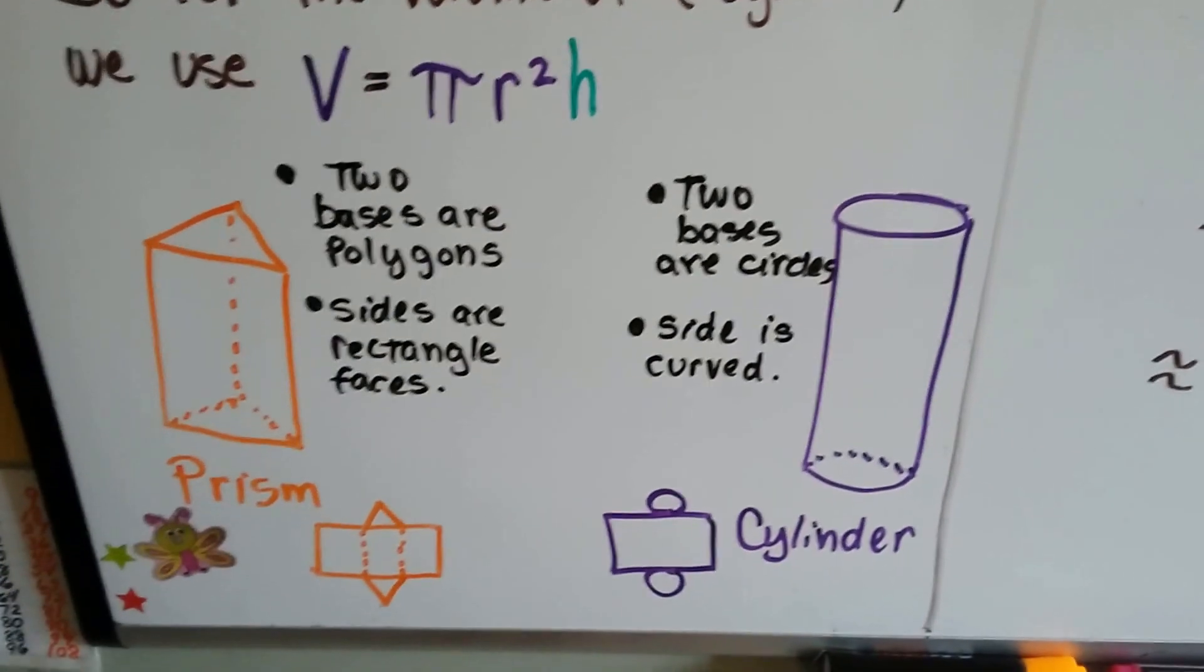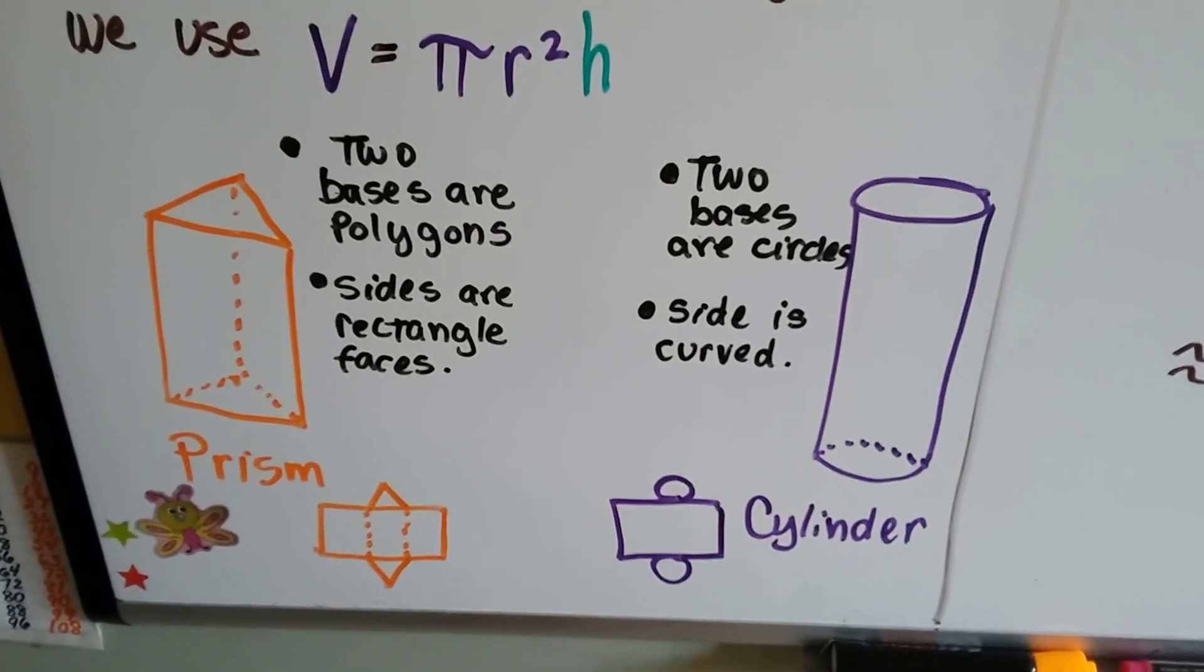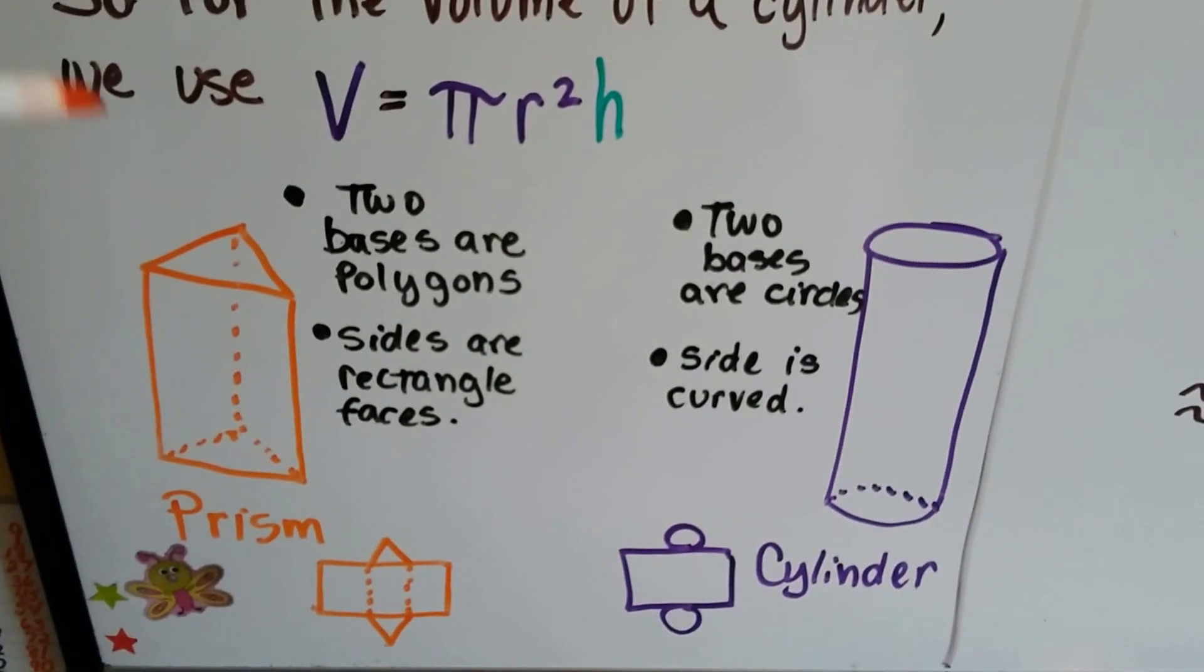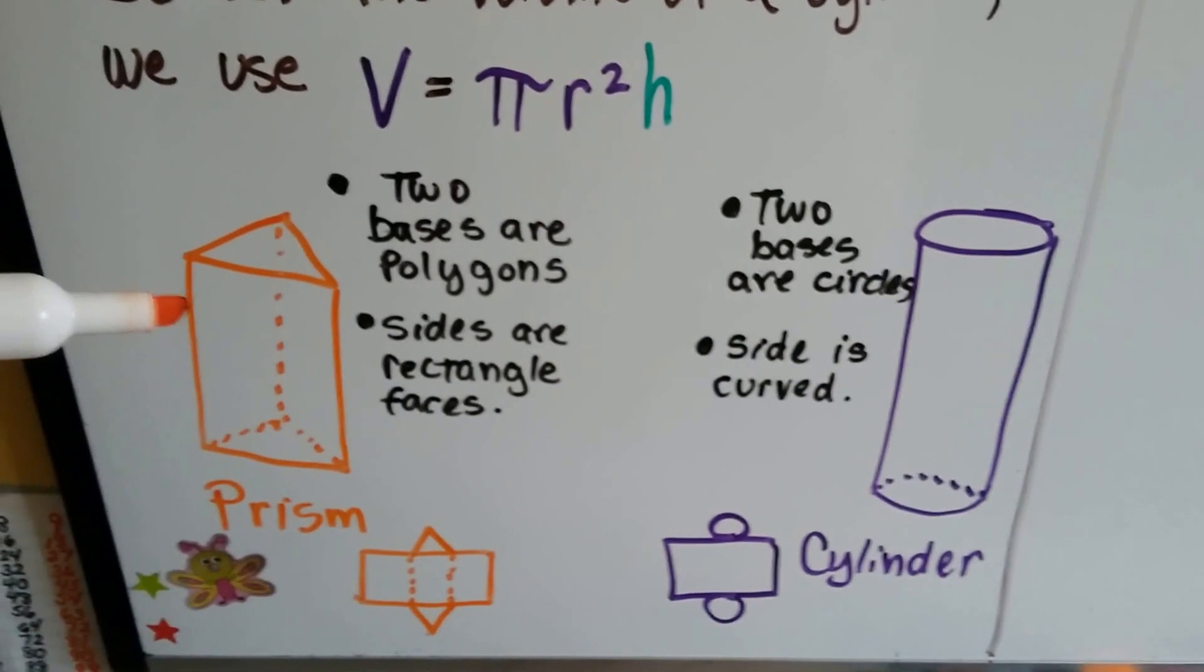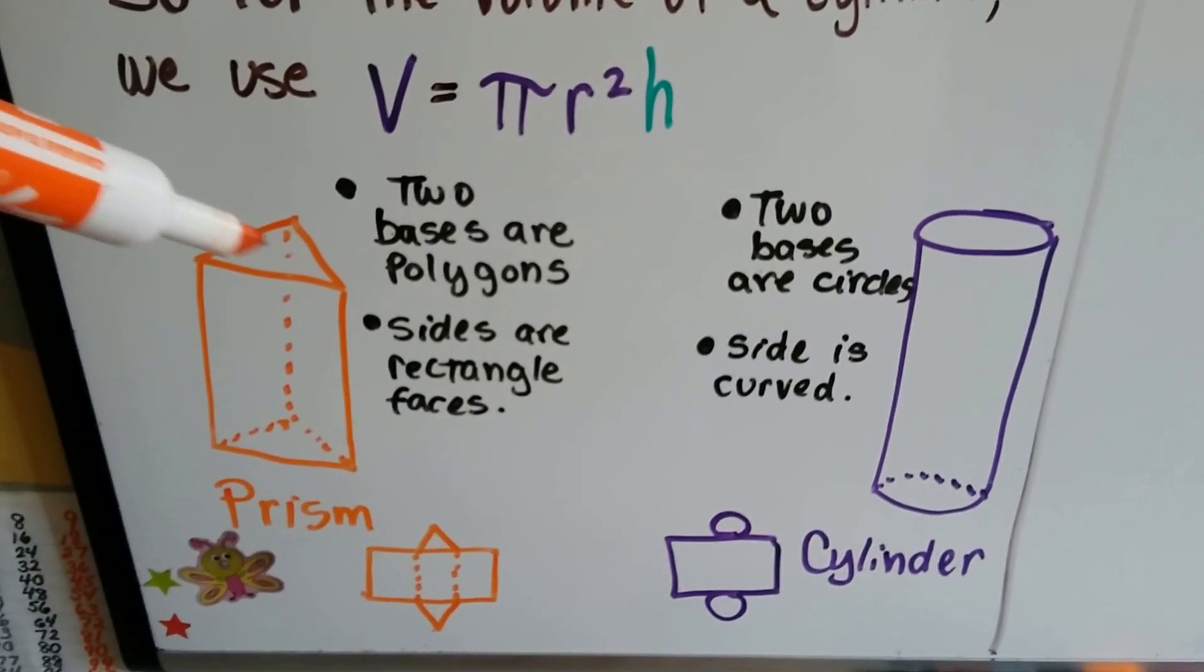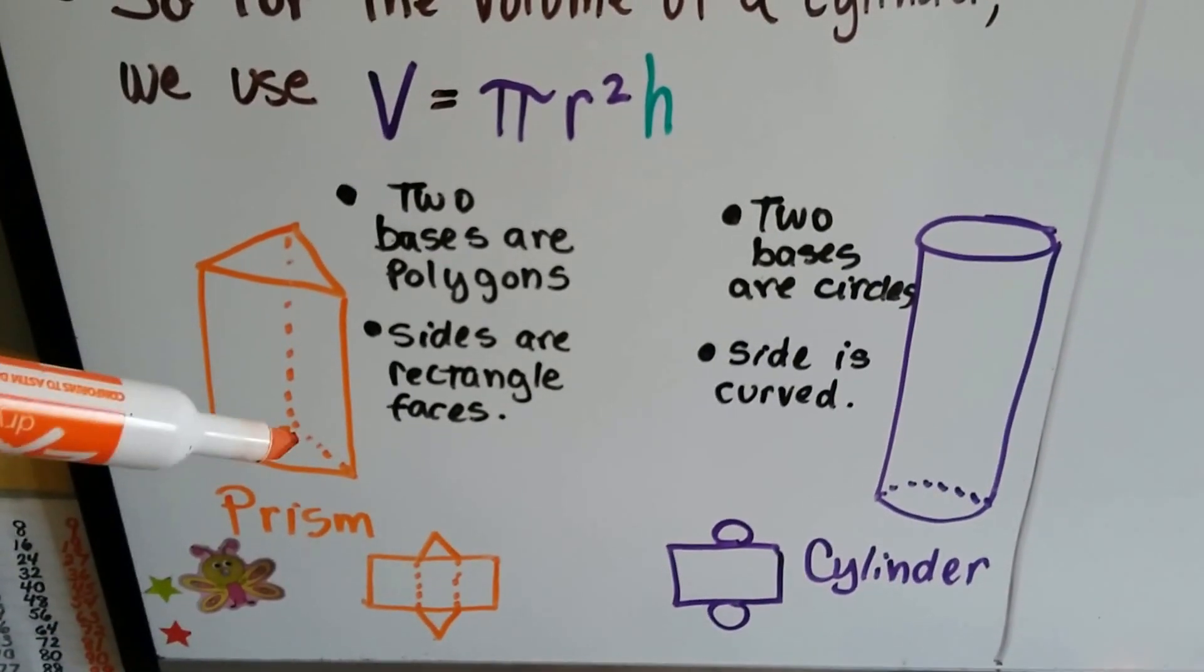Now, if we want to compare a prism to a cylinder, there's all different kinds of prisms. There's triangular ones like this one. There's square prisms. There's pentagonal prisms that have pentagons on the top and the bottom. This one's a triangular prism. It's got a triangle on the top, a triangle on the bottom.